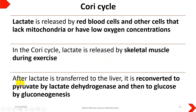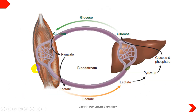In the Cori cycle, that lactate is utilized. The lactate from the muscle is transferred to the liver, where it is reconverted back into pyruvate by the enzyme lactate dehydrogenase (LDH). Then from pyruvate, glucose is formed through gluconeogenesis. This diagram gives a little more detail of this process.